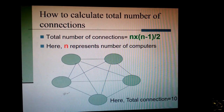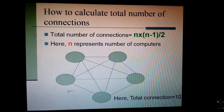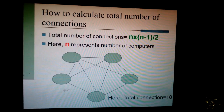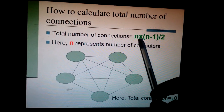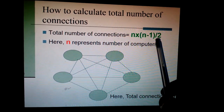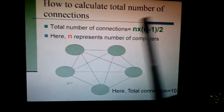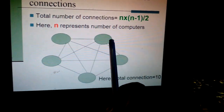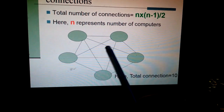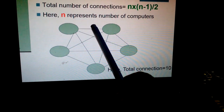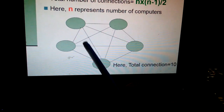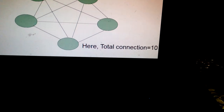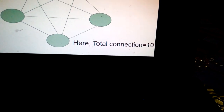So how many connections are there? We can calculate by using this formula — note it down. The total connections equals N into (N minus 1) divided by 2, where N represents the total number of computers. For example, there are 5 computers, and if you count the connections: 1, 2, 3, 4, 5, 6, 7, 8, 9, 10. So by using the formula, we can confirm there are 10 total connections.